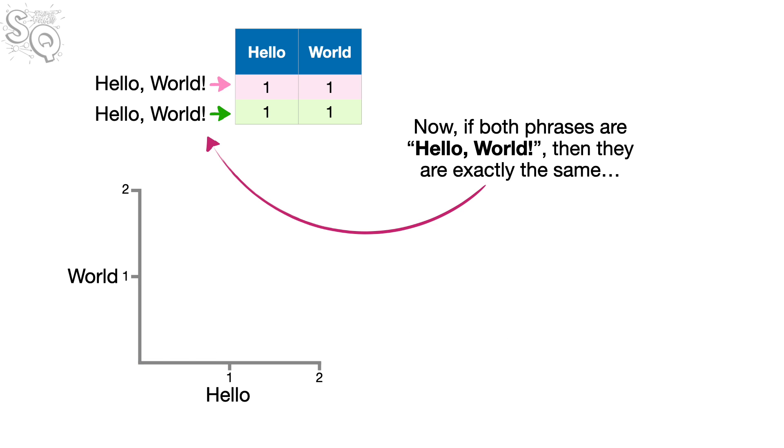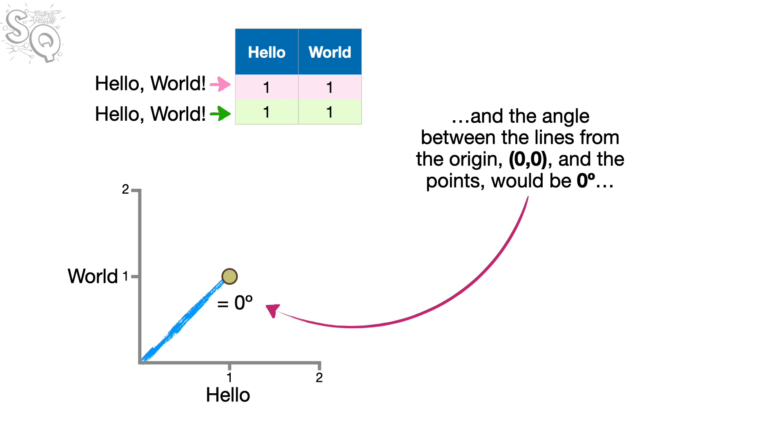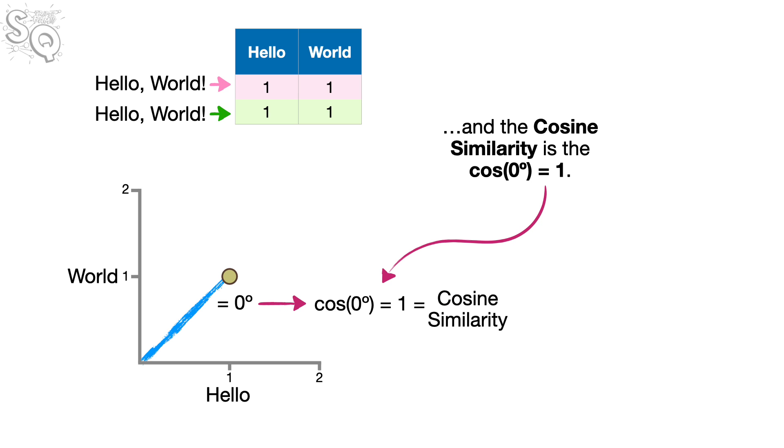Now, if both phrases are Hello, world! then they are exactly the same. And we end up plotting the dots that represent the phrases on top of each other, creating a kind of swampy green color. And the angle between the lines from the origin and the points would be 0 degrees. And the cosine similarity is the cosine of 0 degrees, which equals 1.